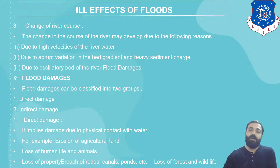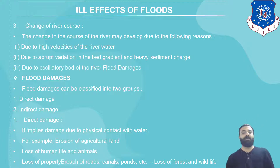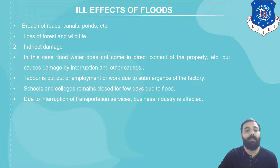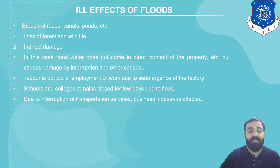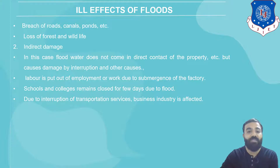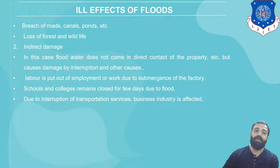Flood damages are classified into two groups: direct and indirect damage. Direct damage occurs due to physical contact with water, including erosion of agricultural land, loss of human life and animals, loss of property, breach of roads, canals, ponds, and loss of forest and wildlife. Indirect damage occurs when water does not come into direct contact with property but causes damage through interruptions — for example, labor is put out of employment, or factories, schools, and colleges remain closed for a few days due to flood, and transport services and industries are disrupted.